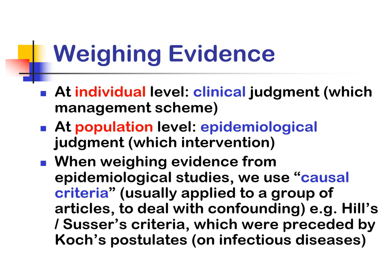When weighing evidence, at the individual level clinical judgment may be used, while at the population level epidemiological judgment is used. When weighing evidence from epidemiological studies, we use causal criteria to deal with confounding, which will be discussed in later slides.